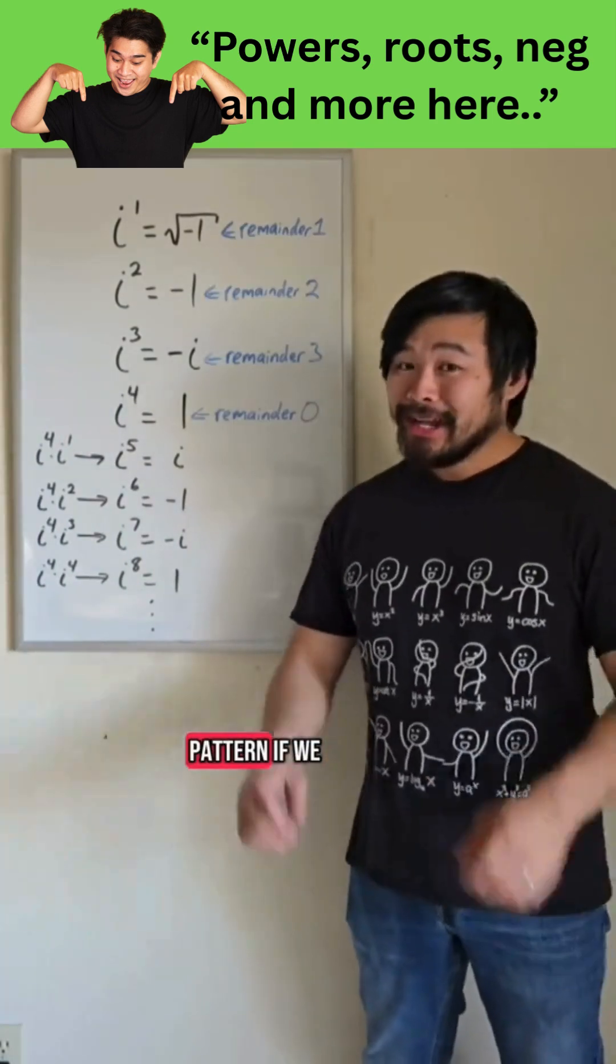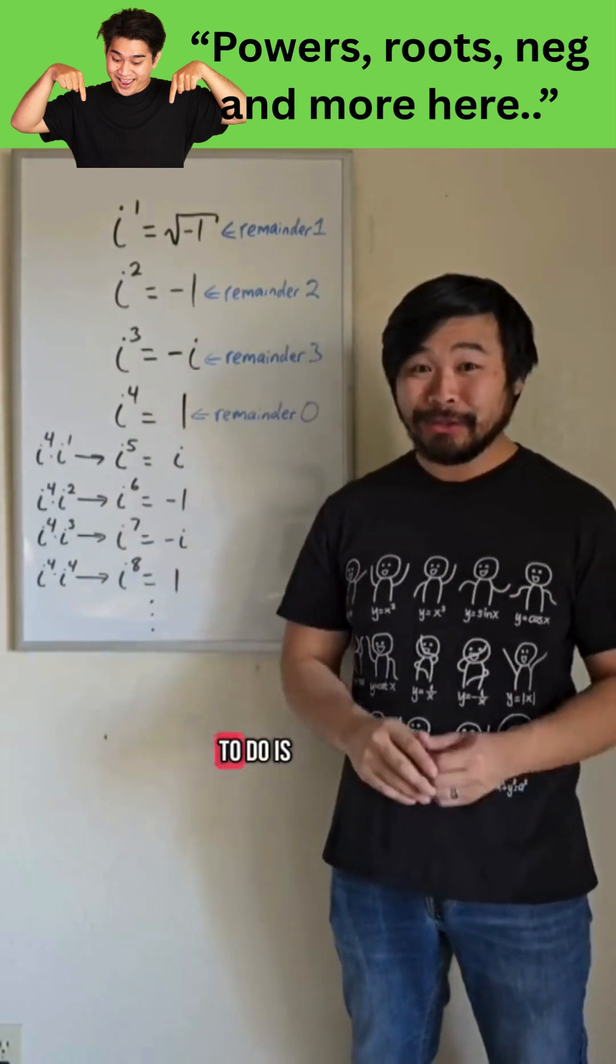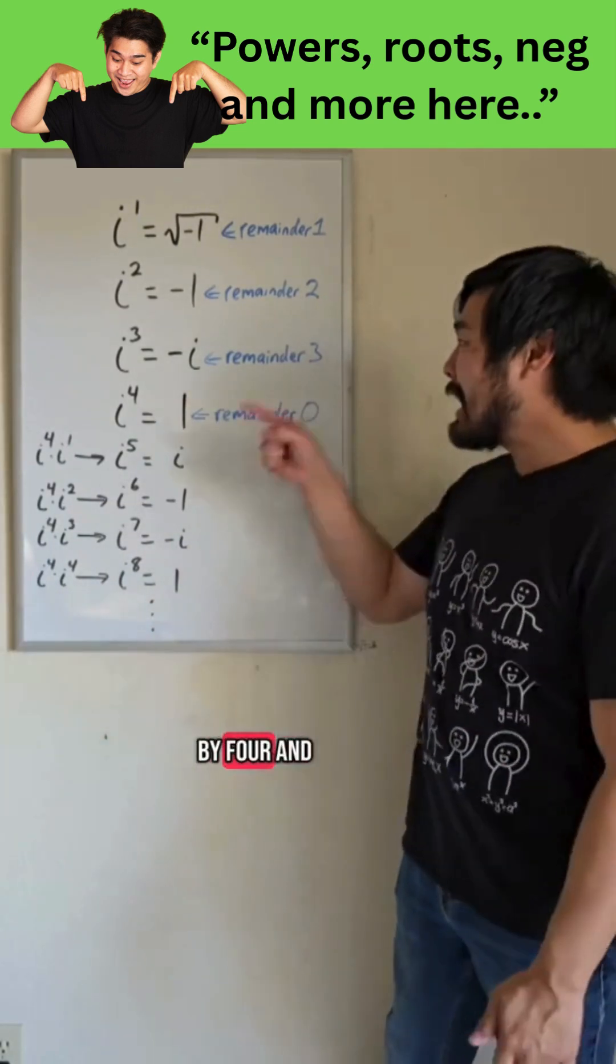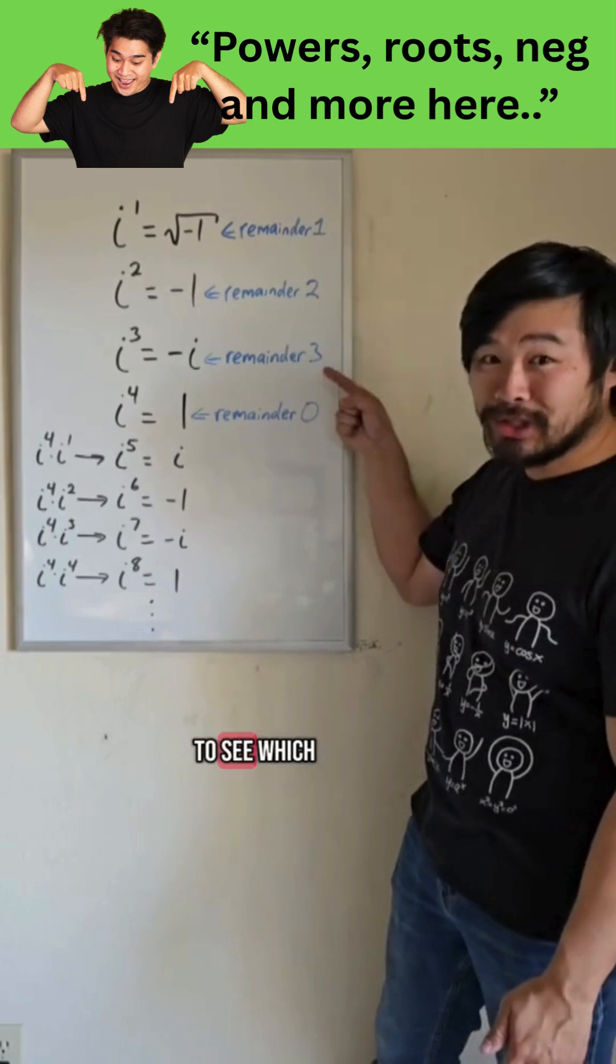So here's the pattern. If we have i raised to some whole number, all we have to do is divide that exponent by 4 and see what the remainder is to see which of these it is.